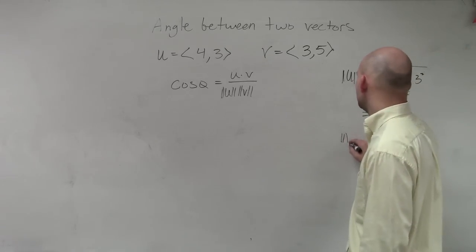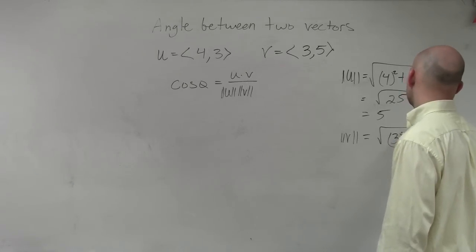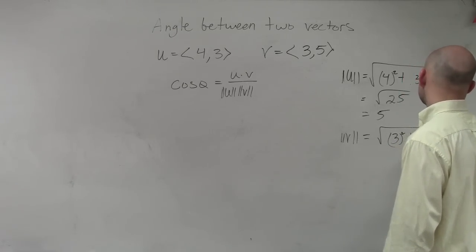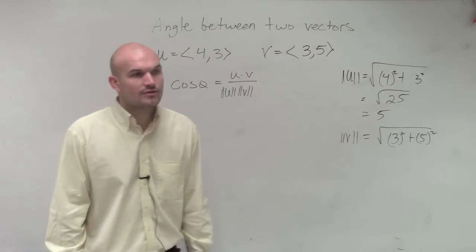Then let's do the magnitude of v. Magnitude of v is going to be the square root of 3 squared plus 5 squared. So we'll have 9 plus 25, which is the square root of 34.